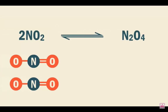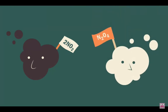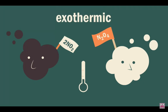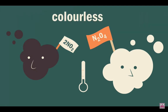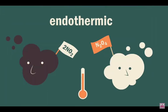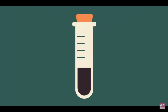The dimerization of nitrogen dioxide (NO₂) to dinitrogen tetroxide (N₂O₄) is exothermic. NO₂ is a brown gas, while N₂O₄ is colorless. Decreasing temperature favors the exothermic reaction, producing more N₂O₄, so the mixture appears paler. Increasing temperature favors the endothermic reaction, producing more NO₂, so the mixture appears darker brown.